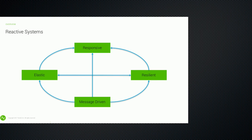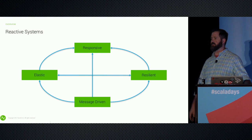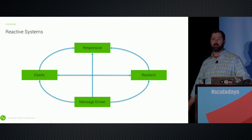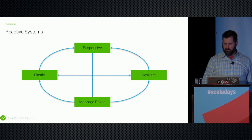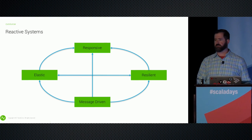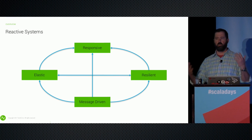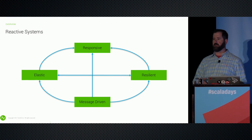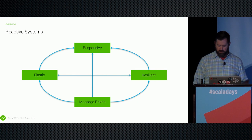We ended up standardizing on Finagle. We wrote Finagle protobuf as a plugin to Finagle to work with protocol buffers as our wire format, which brought us into Twitter futures. We wanted our engineers to be able to write in Java as well as Scala, which led us to Guava Listenable Futures. And now with Java 8, we have completable futures. So my engineers are always wondering: which of these should I use, and when should I change from one type to another?